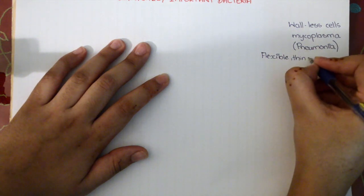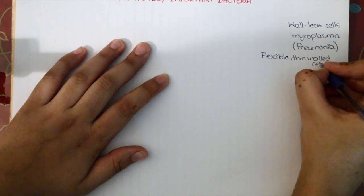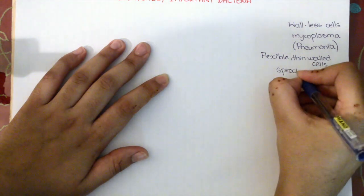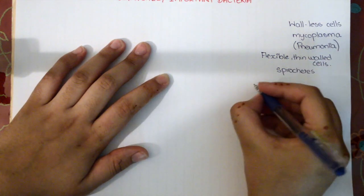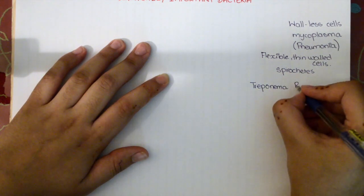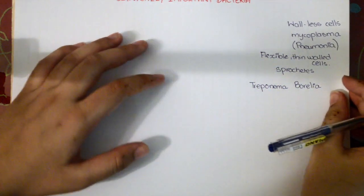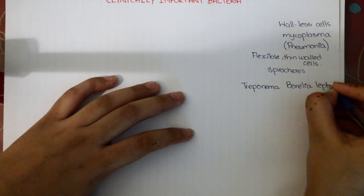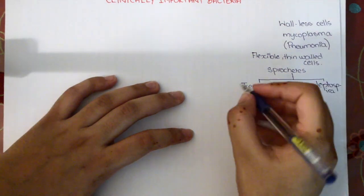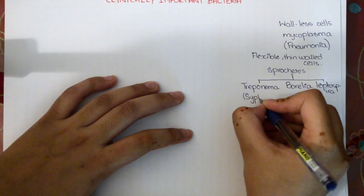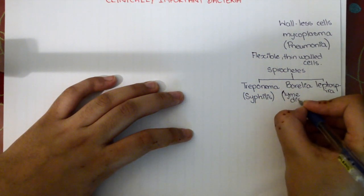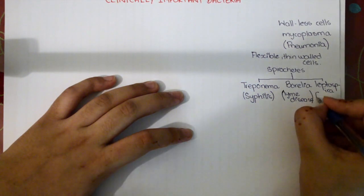The next category is flexible thin-walled cells — these are the spirochetes. We have three spirochetes: Treponema, Borrelia, and Leptospira. Treponema causes syphilis, Borrelia causes Lyme disease, and Leptospira causes leptospirosis.